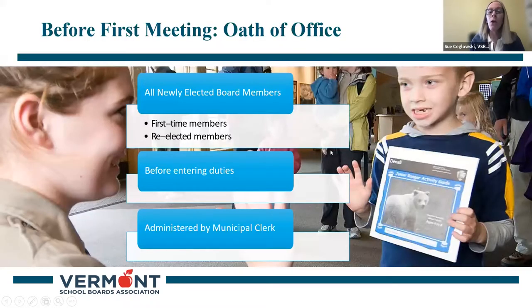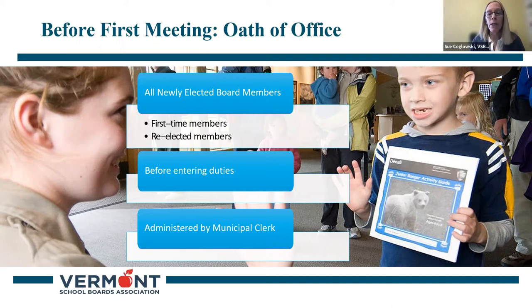Before meeting for the first time, all newly elected school board members — both first-time members and re-elected members — must be sworn in by taking the oath of office. The oath of office is usually administered by the municipal clerk. That's an important detail to take care of before the first board meeting after the election.